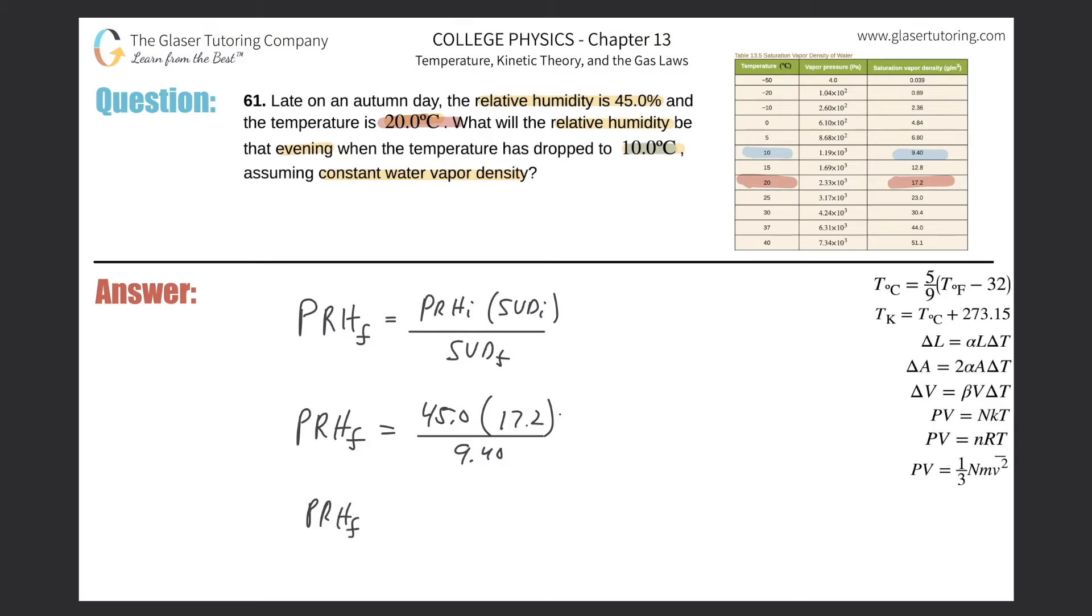So percent relative humidity will then be equal to, let's just do the math. So now it's 45 times 17.2 divided by 9.4, and we get about 82.3. So 82.3%. And voila, there's the answer.